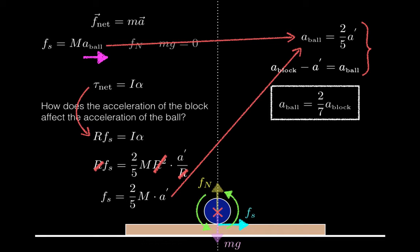If the ball had been hollow, the rotational inertia would have been two-thirds MR squared, which would have resulted in a different ratio.